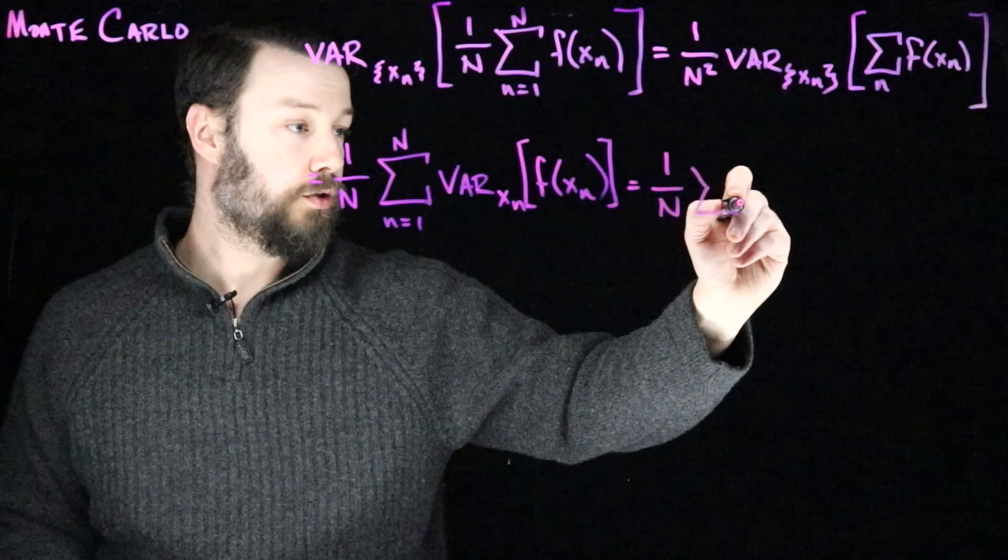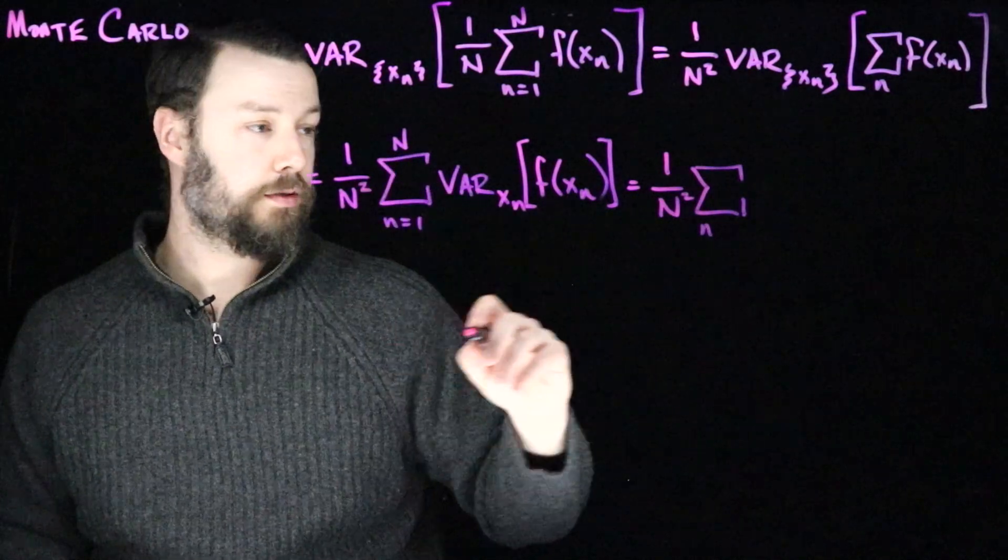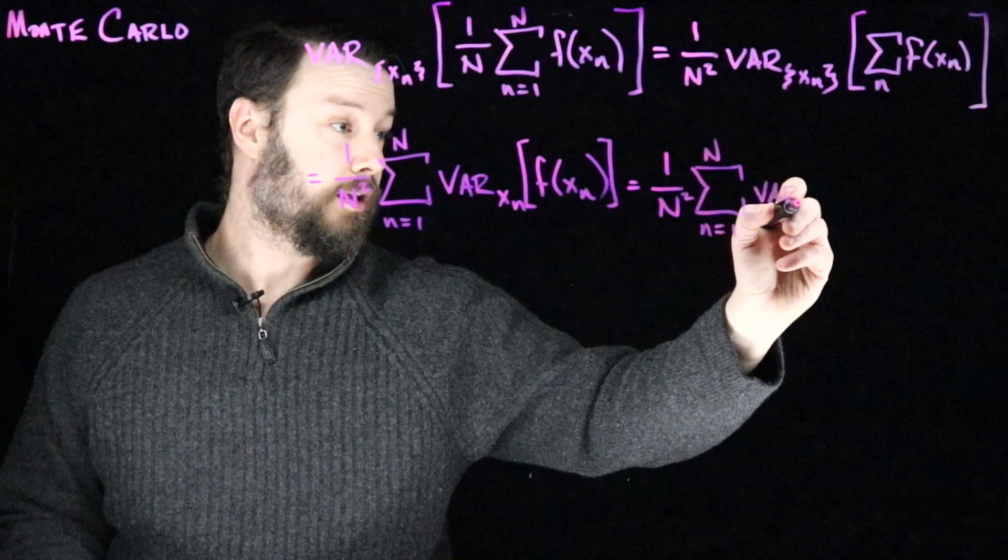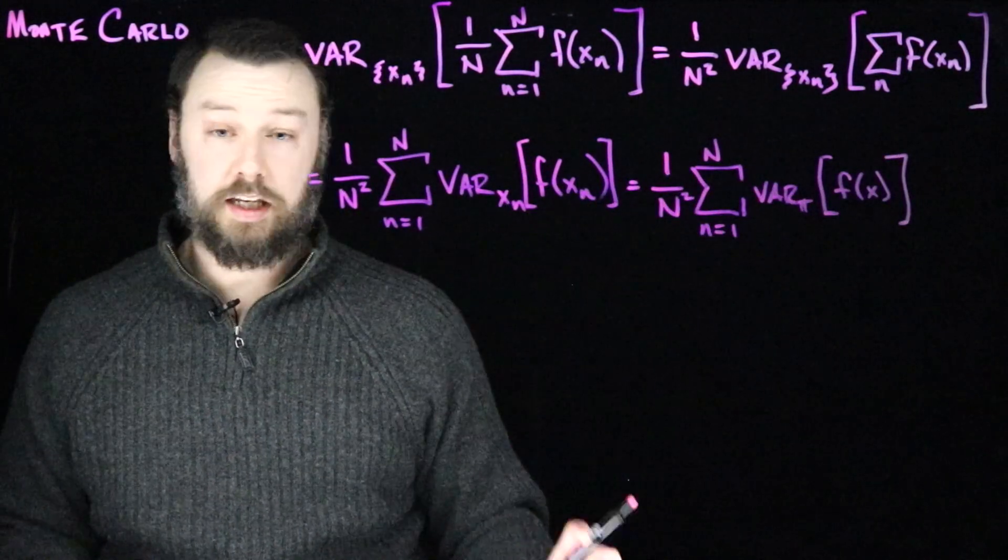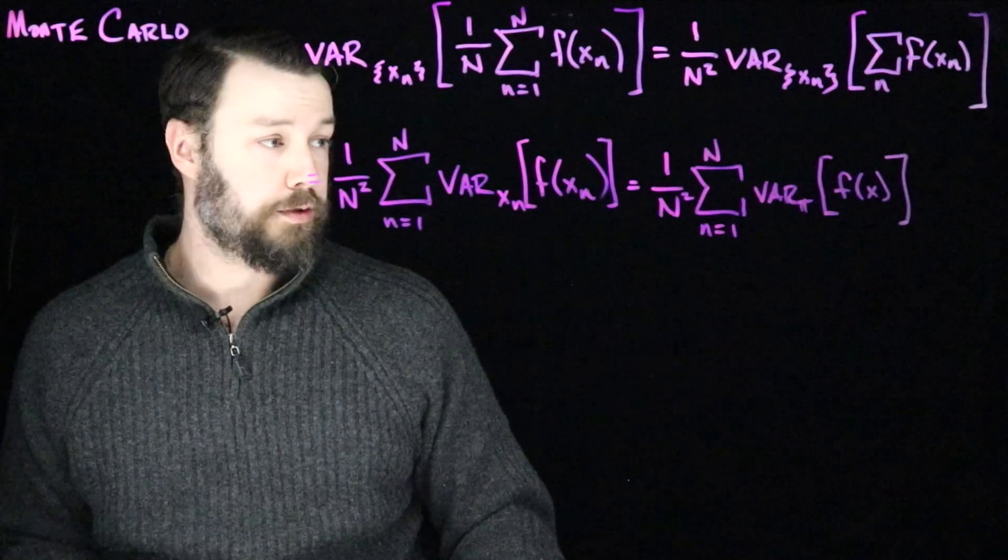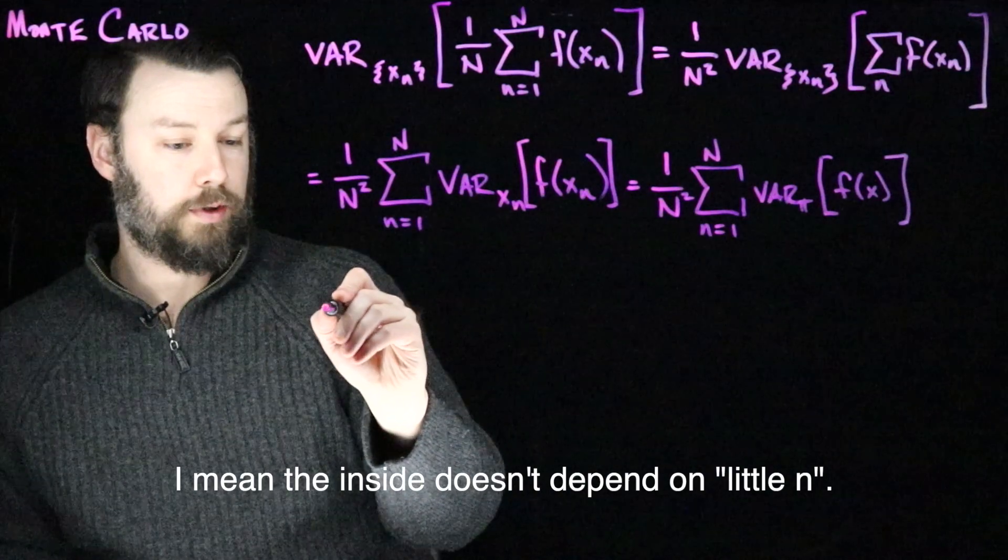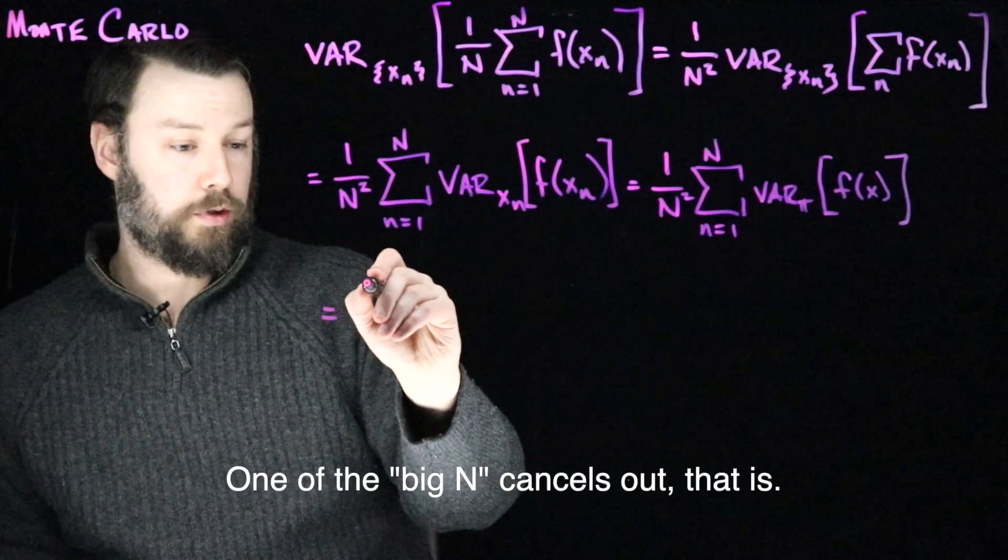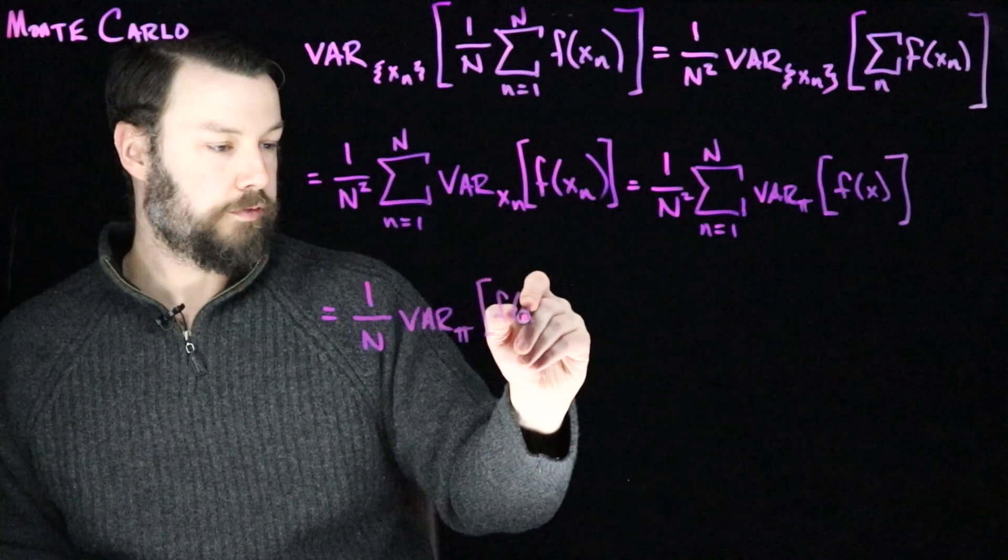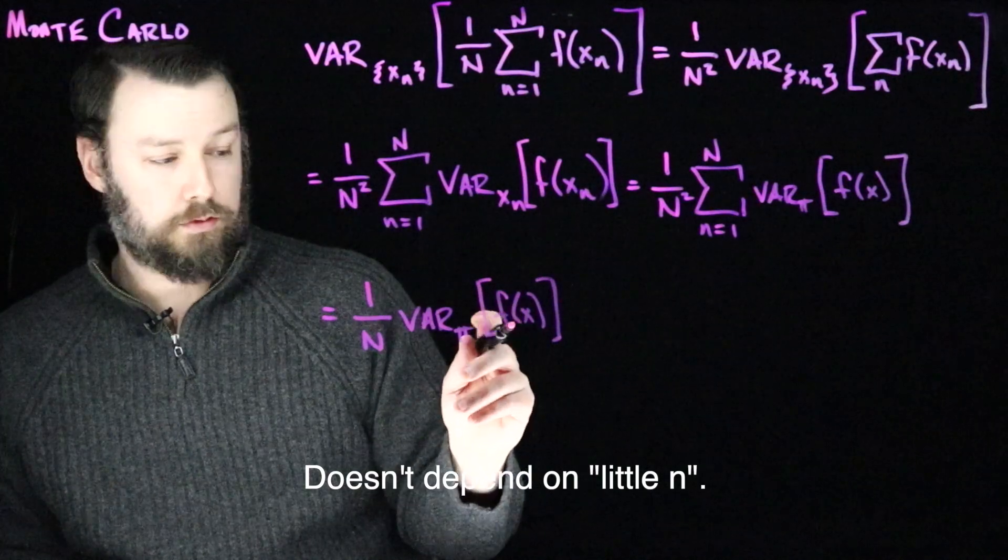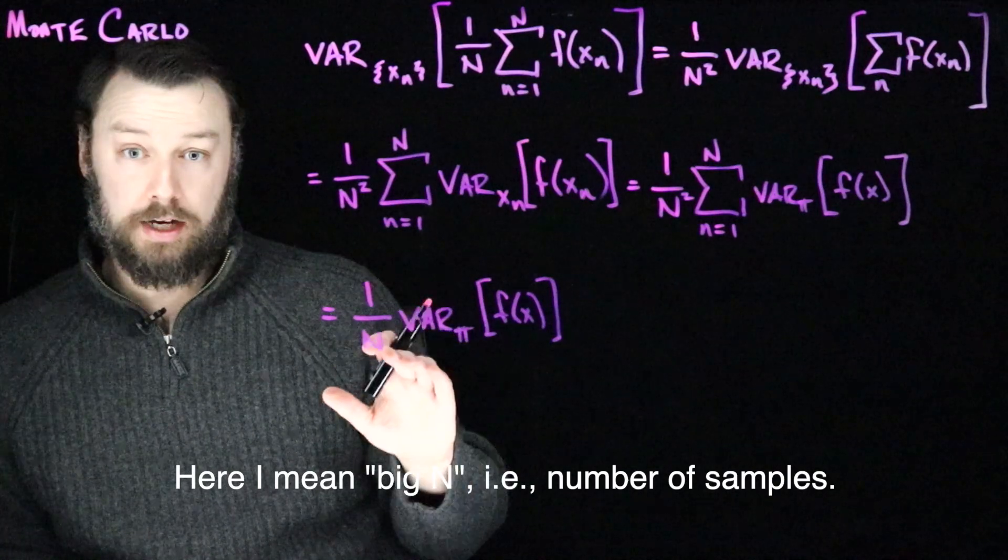And so then this means that I can have a 1 over n squared—sorry we need squares here that's important—of the variance under pi of f of x. So these are the same from our point of view because all of the xn's come from that pi distribution. Note that this now really doesn't depend on n, and we see immediately that what happens is one of those n's cancels out and we wind up with a 1 over n multiplied by the variance of pi. This is a thing that doesn't depend on n at all. This is the variance of one of these samples. But as n increases, this quantity goes down as 1 over n.